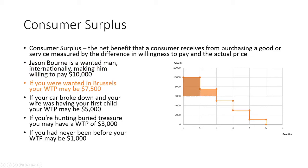Now if we move down to this next person, whose car broke down and is willing to pay $5,000 to get there in time for the birth of his first child, but the price is $6,000 — they will not be in the market. They're not going to spend $6,000 on something they're only willing to pay $5,000 for. So they don't have any consumer surplus because they aren't purchasing a ride.